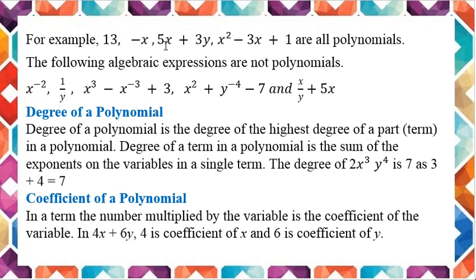13 minus x; 5x plus 3y; x squared minus 3x plus 1. In all these examples, you can observe that the variables have positive exponents. In the first one, minus x, the exponent is 1. 5x exponent is 1. 3y exponent is 1. x squared exponent is 2. Minus 3x, the exponent is 1. So they all are polynomials.